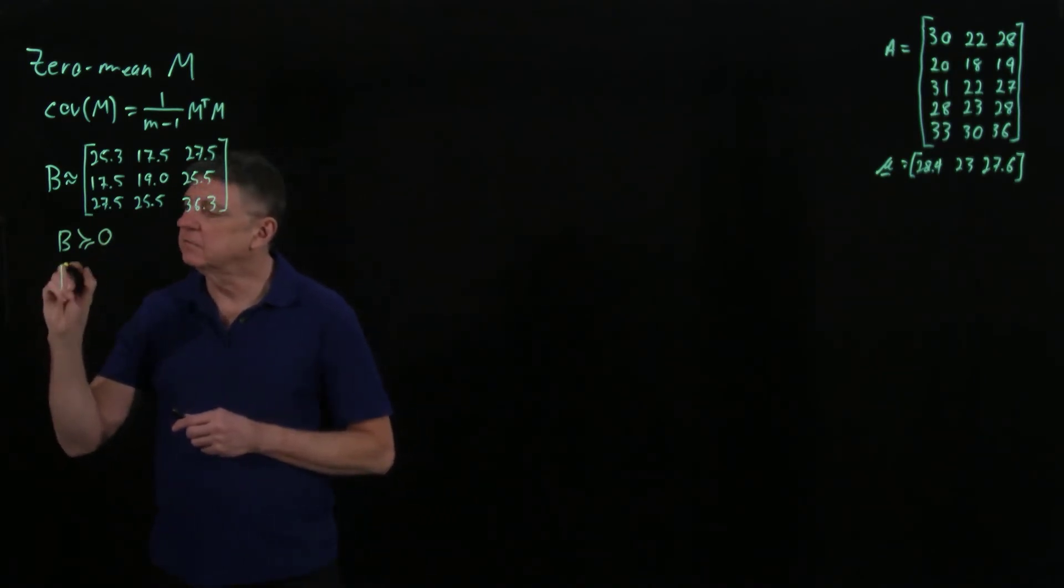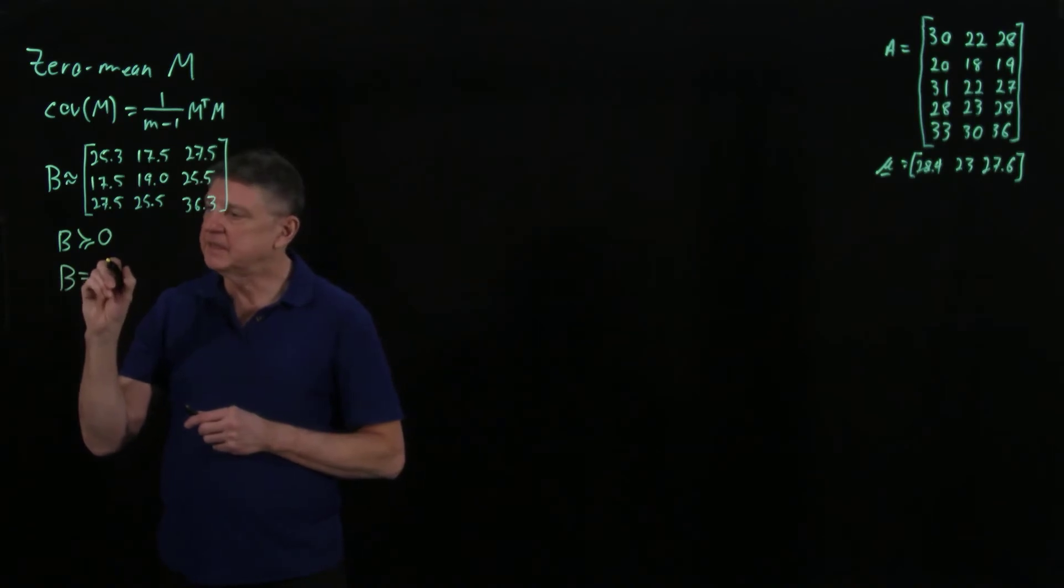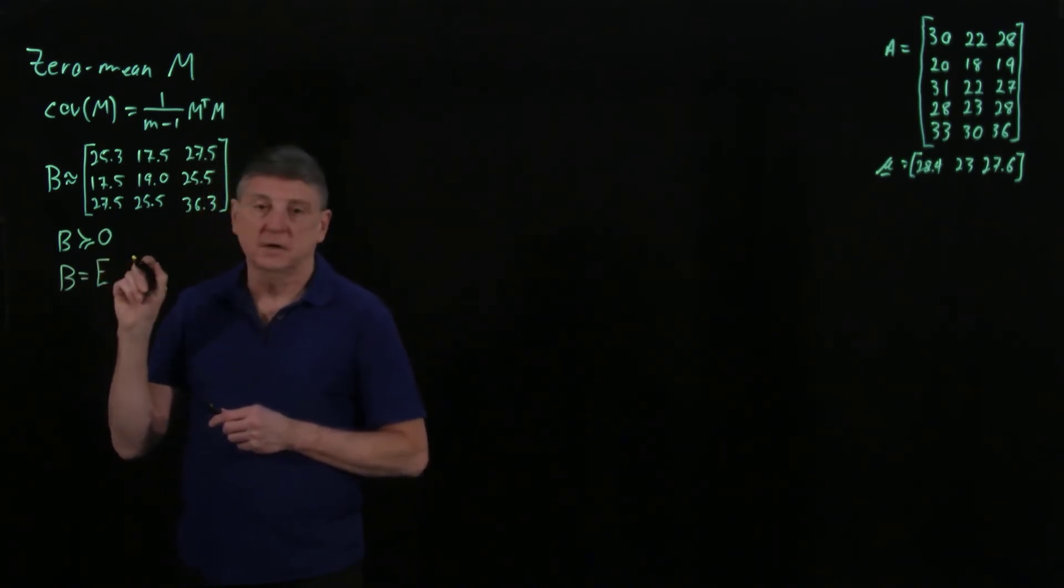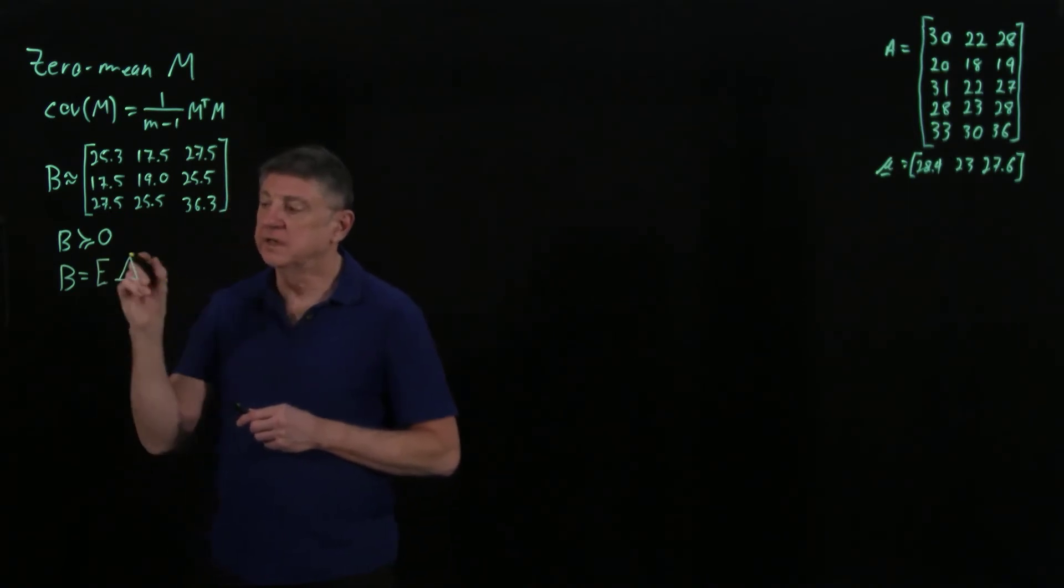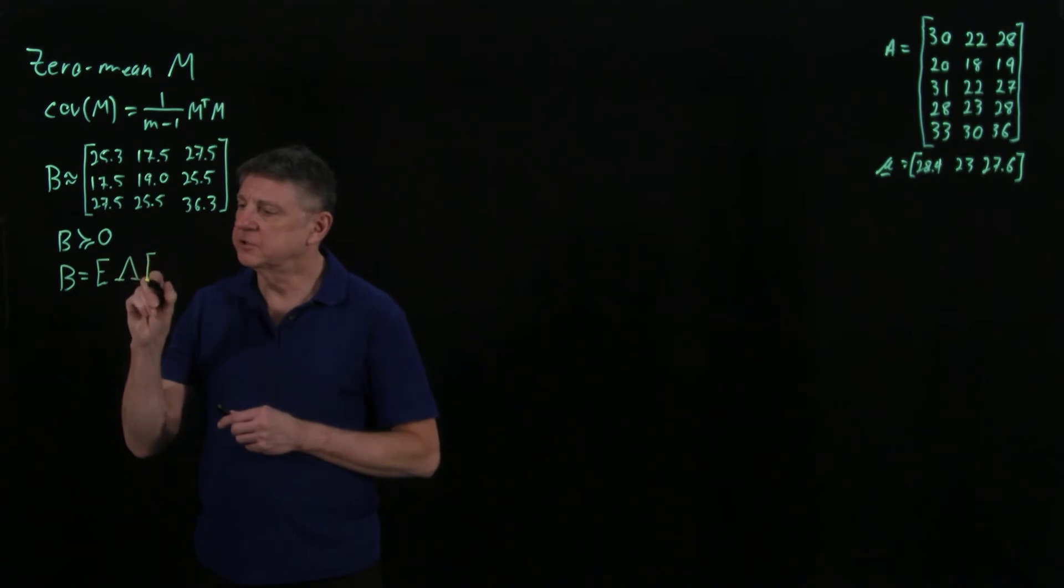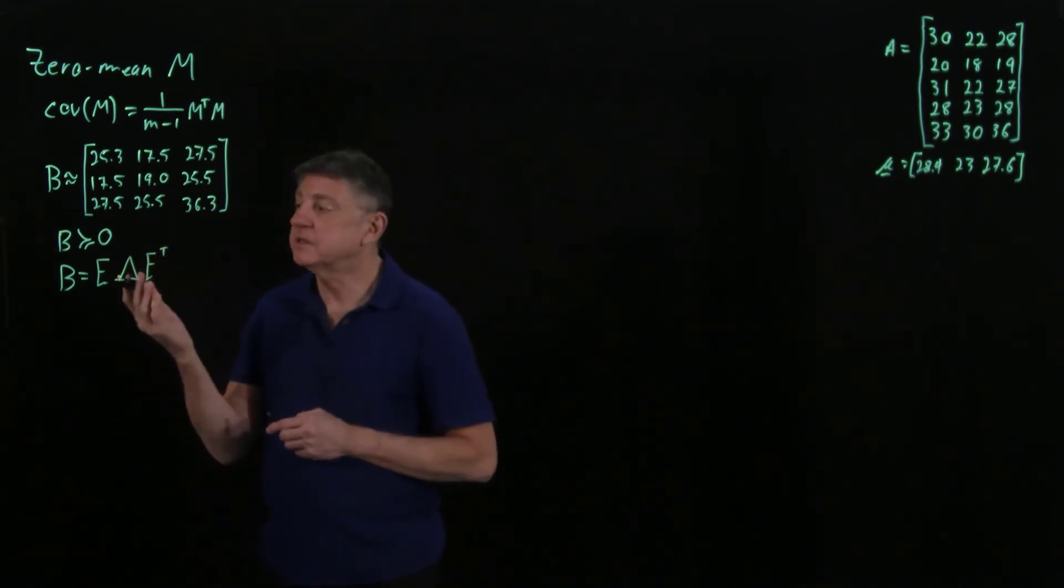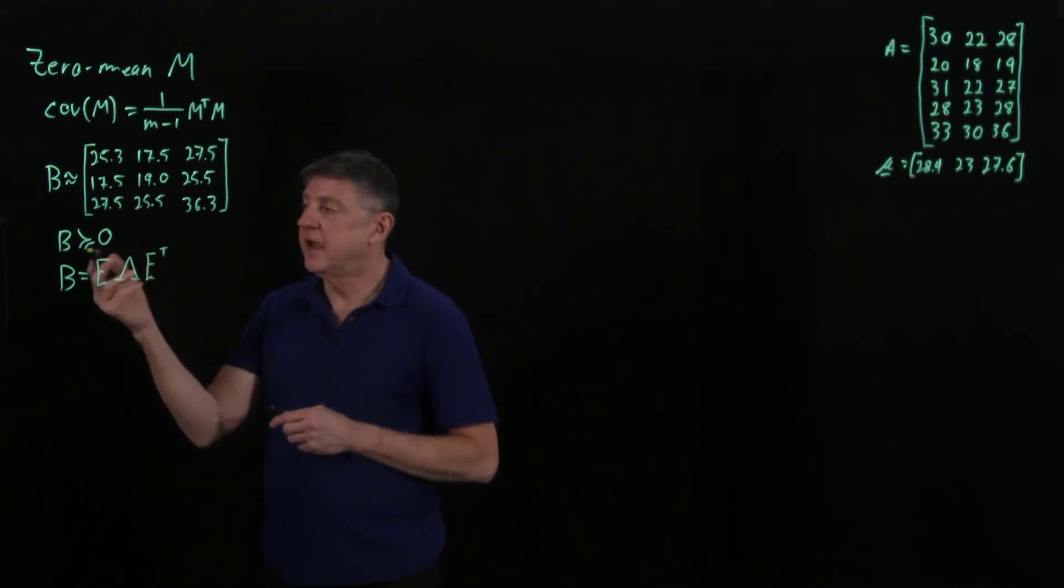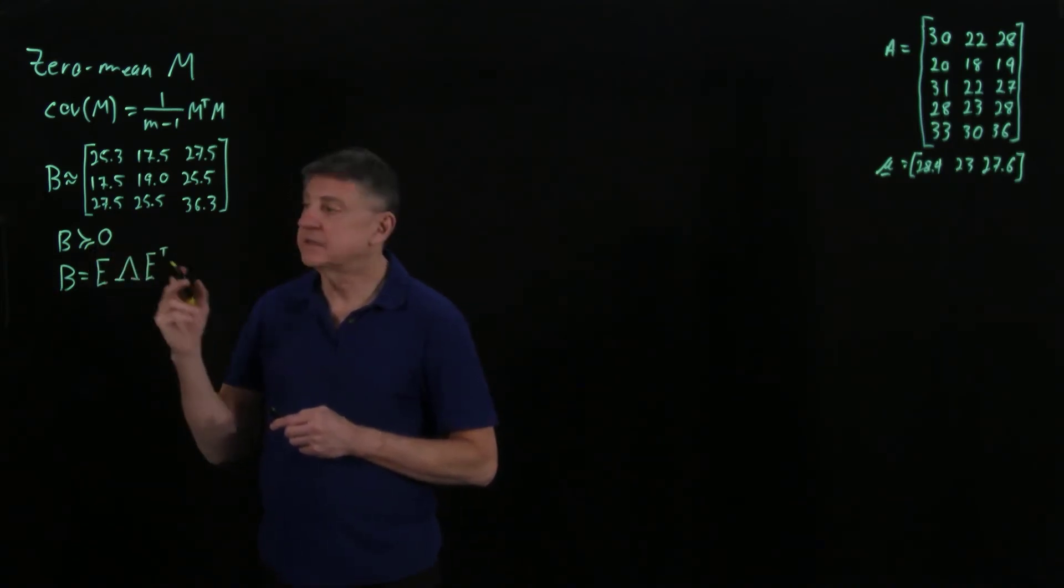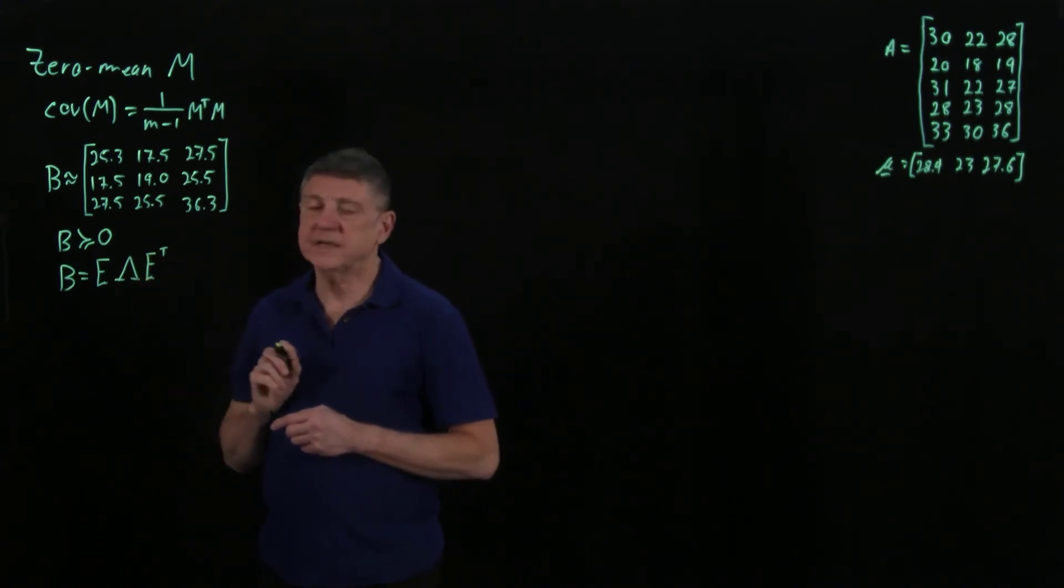I can write that spectral decomposition as the eigenvector basis times the eigenvalue diagonal, and then the transpose of the eigenvector basis. Every symmetric matrix has an eigendecomposition, and this one is symmetric positive definite, meaning each eigenvalue is greater than or equal to zero.